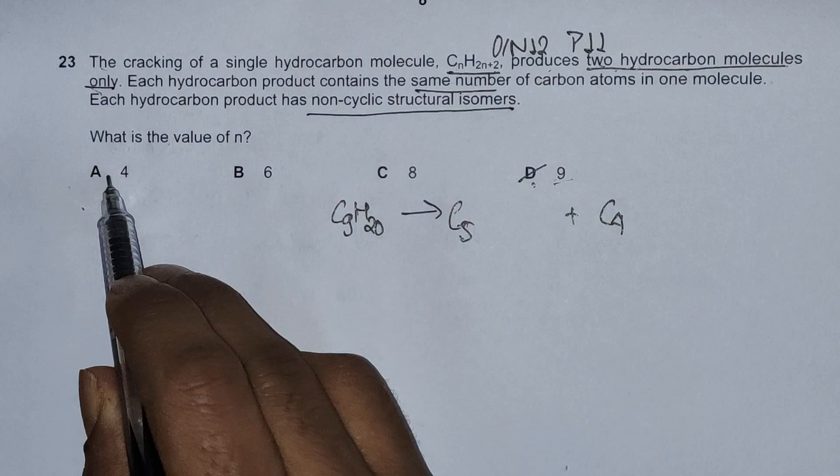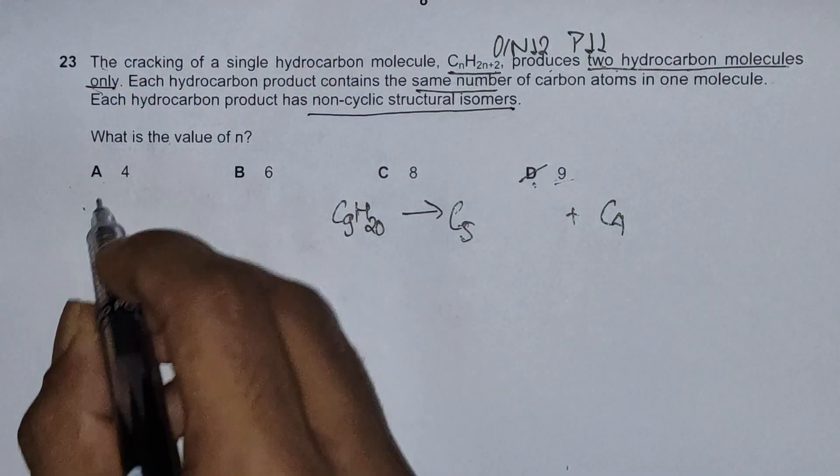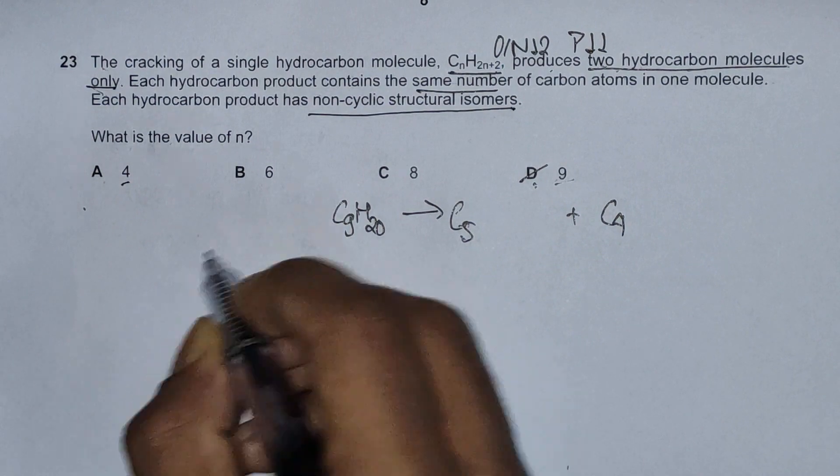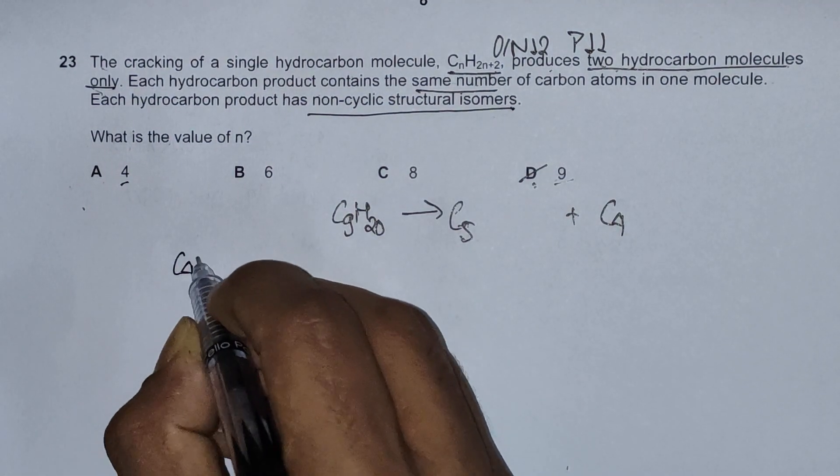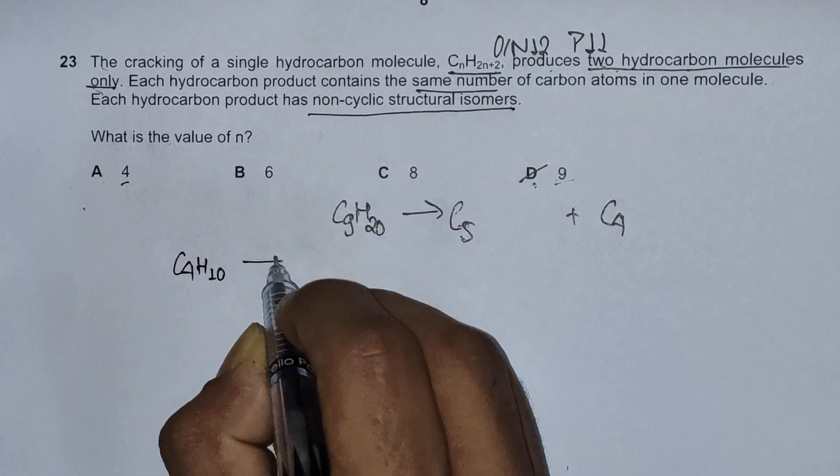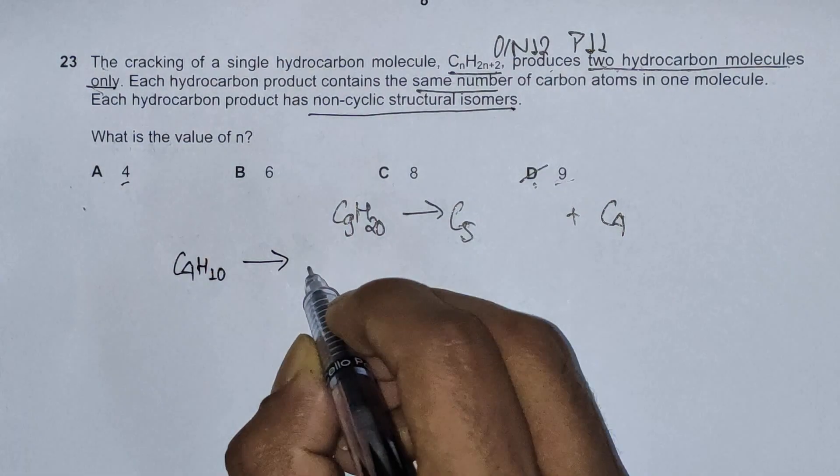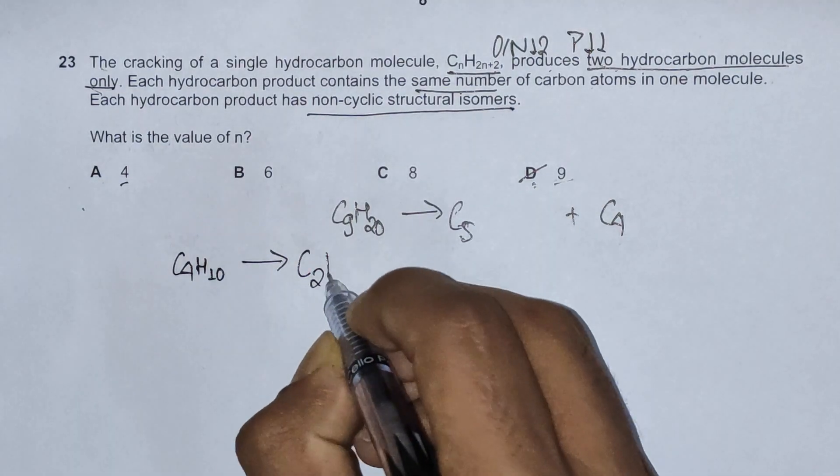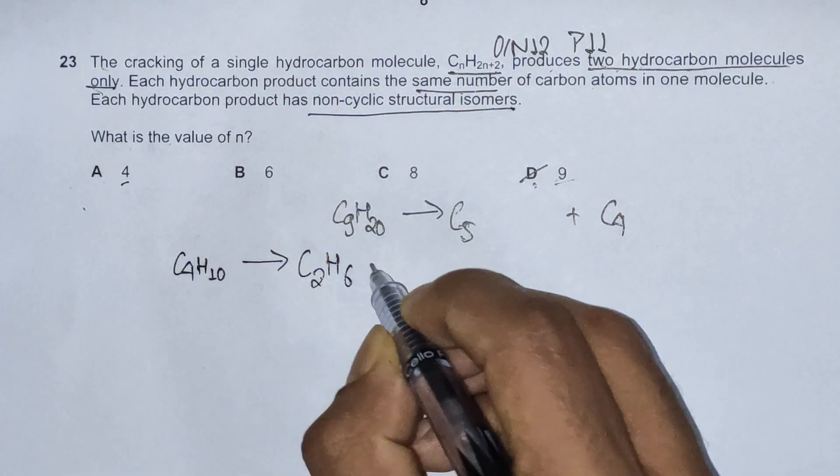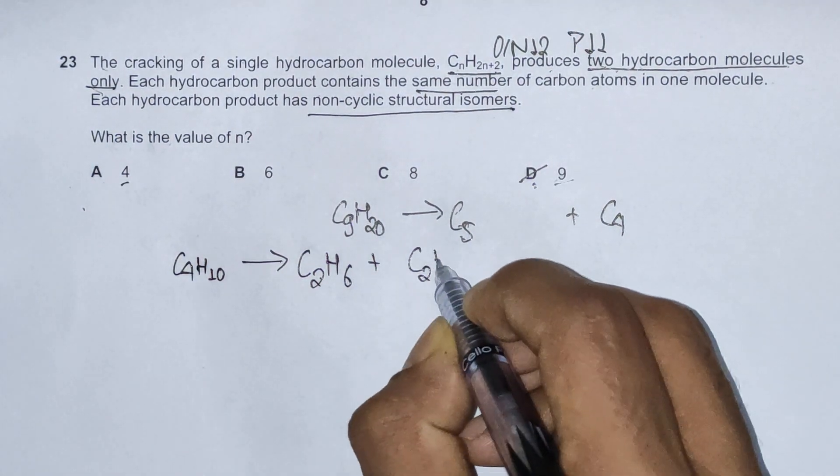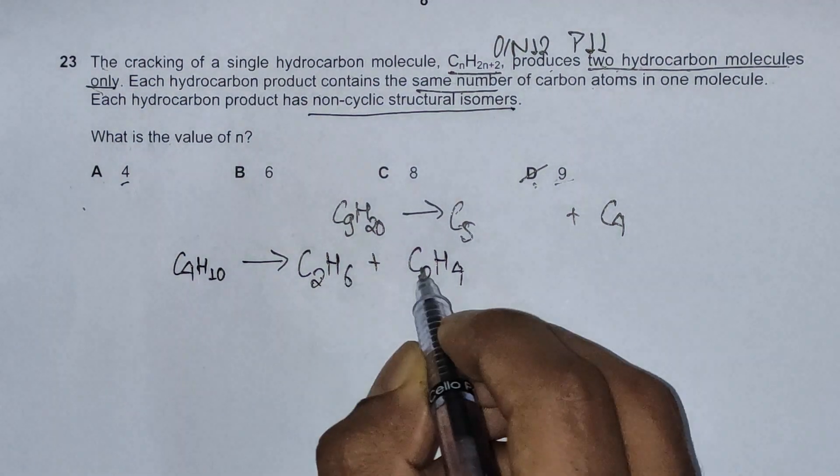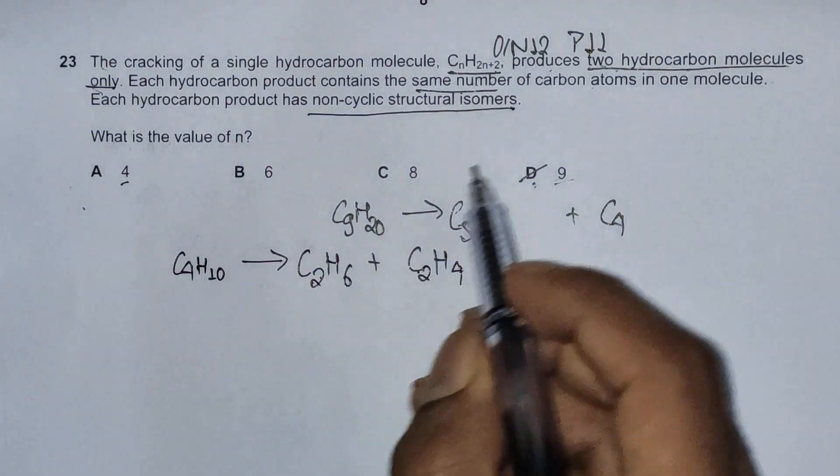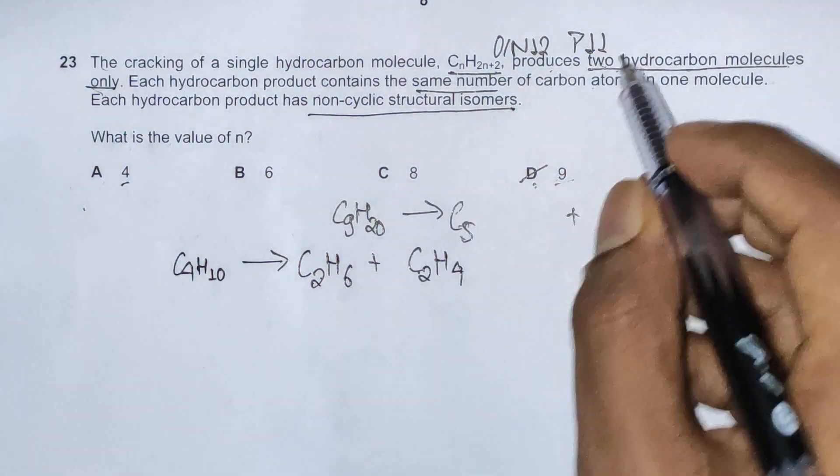Now checking the options going from A, B and C. First we'll plug in 4 carbon atoms. That means we'll have C4H10. When we crack this, we can obtain same number of carbon atoms, so we'll obtain C2H6 and C2H4. Although this satisfies the first condition,